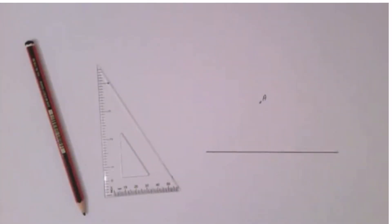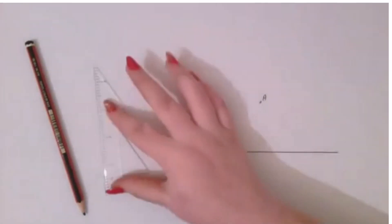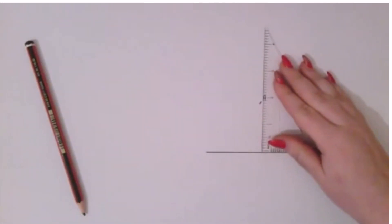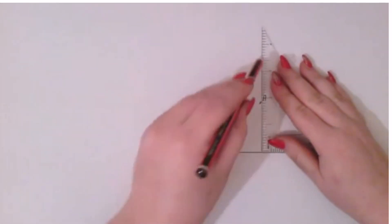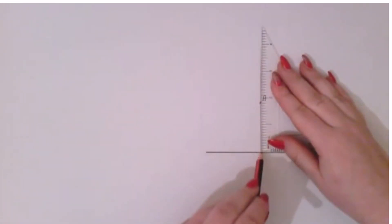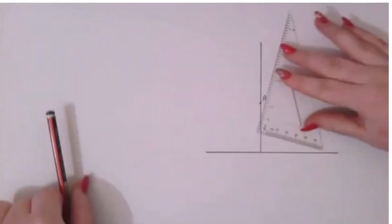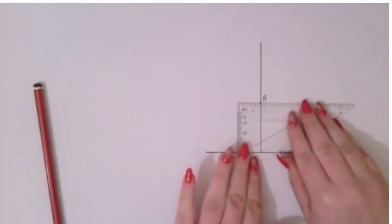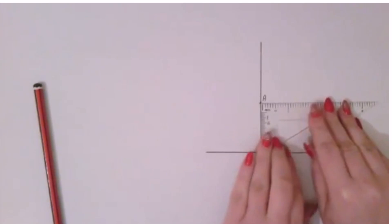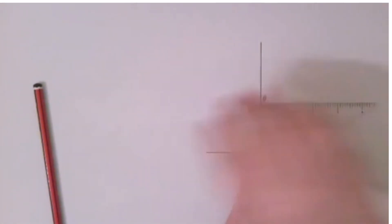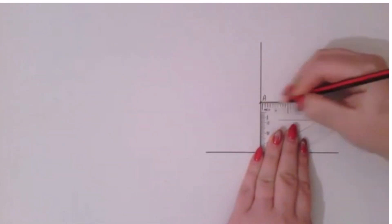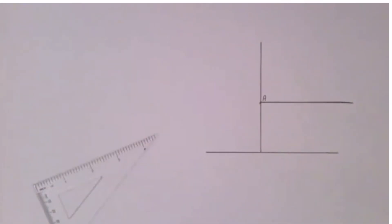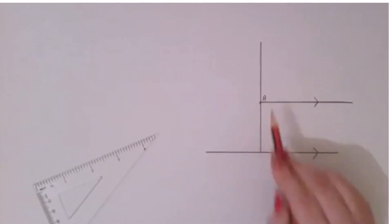In the second method we are going to use a set square. The first thing we do is draw a line perpendicular passing through A. We then turn our set square and draw another line perpendicular passing through A. And here we can see we have a parallel line to our given line going through A.